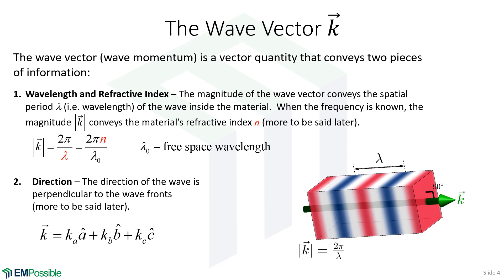The dispersion relation: back when you were studying electromagnetics for the first time, at some point you took the curl equations, combined them to get the wave equation, solved it, and got a plane wave with a polarization and an oscillation term. If you take the expression for a plane wave, plug it back into the wave equation, and do some algebra, out comes the dispersion relation. You're seeing the dispersion relation here for linear homogeneous isotropic materials. Fundamentally, a dispersion relation relates the wave vector to the frequency of the wave.